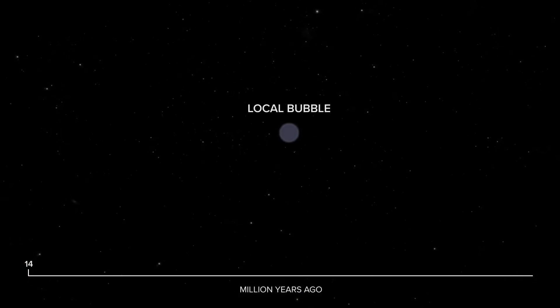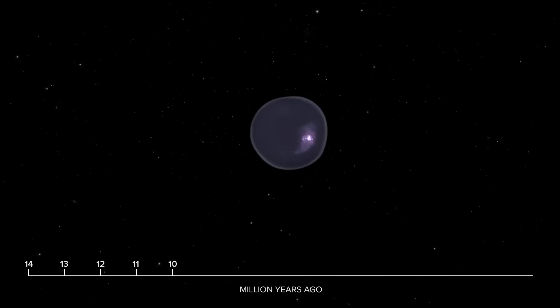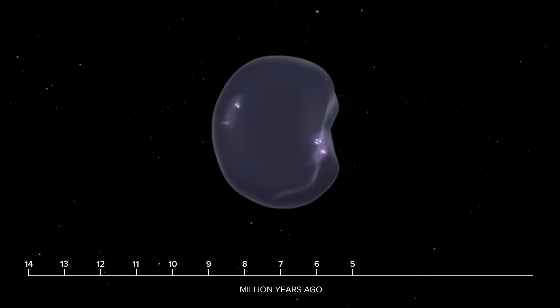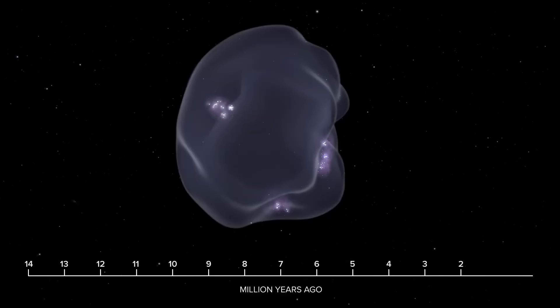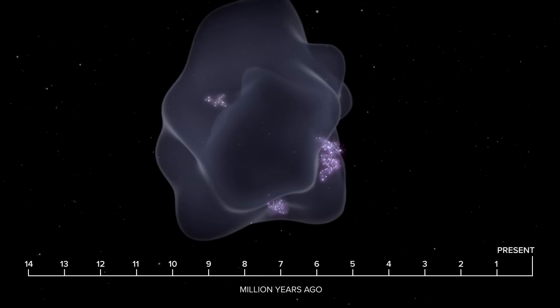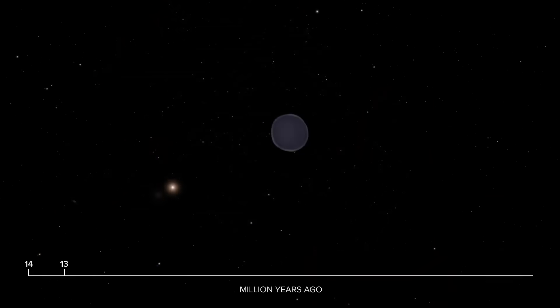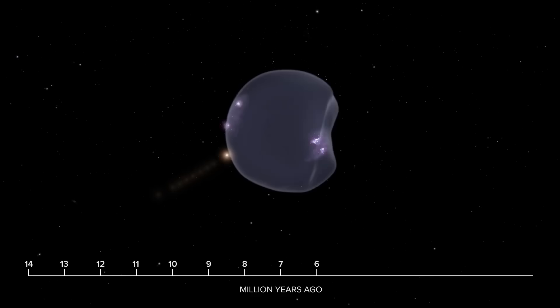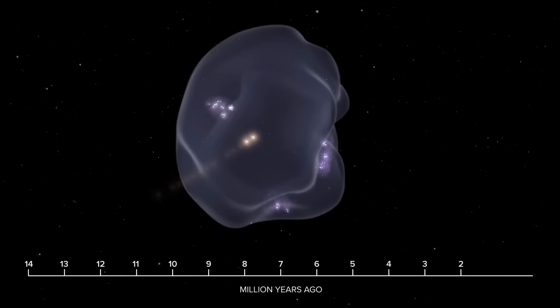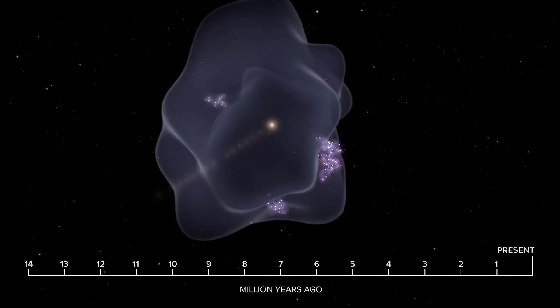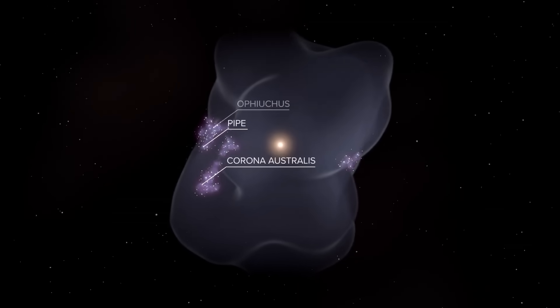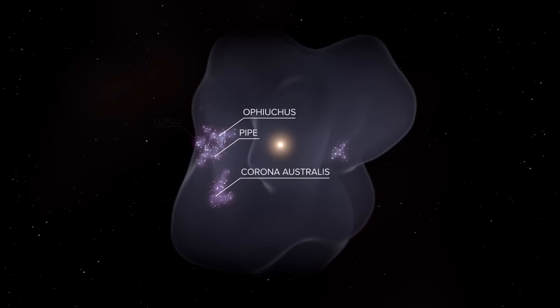Over time, this bubble expanded, sweeping up clouds of interstellar gas and dust along its surface. As centuries passed, these clouds condensed, giving birth to thousands of new stars. Our sun was far from this event when the bubble began forming, but roughly 5 million years ago, it drifted into the bubble's interior during its journey around the galaxy. Now we reside within this expansive 1,000-light-year-wide structure, observing active star formation on the bubble's surface, while the interior remains surprisingly empty.